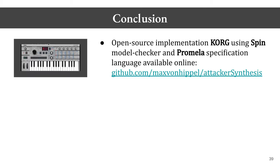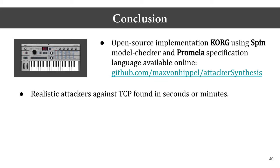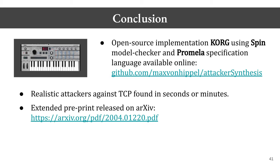Finally, we'll conclude. First and foremost, we have the deliverable of an open source implementation of our approach called Quark, using the SPIN model checker and PROMELA specification. This tool is available online at the given URL, and we have a full documentation website for the tool. Second, we found realistic attackers against TCP in a matter of seconds or minutes. We have an extended preprint released on arXiv, which includes detailed mathematical proofs and slightly more figures. I'm happy to take any questions, and thank you very much. I hope you enjoyed the presentation.